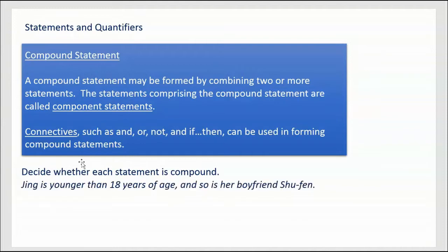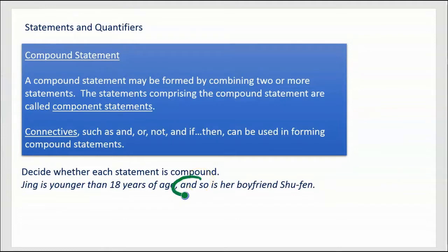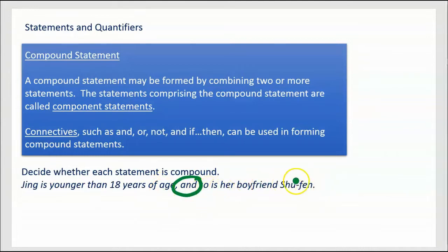First: 'Jing is younger than 18 years of age, and so is her boyfriend, Xu Fin.' The keyword is 'and.' Jing is younger than 18 years of age — that's a statement we can decide the truth of. And so is her boyfriend Xu Fin — we can also decide that. It's combined by the connective 'and.' So yes, this is definitely a compound statement.